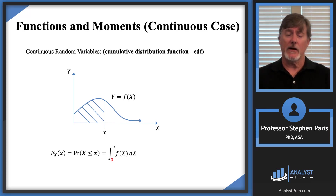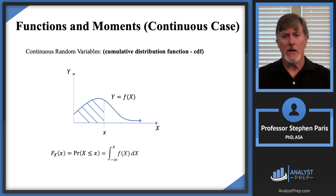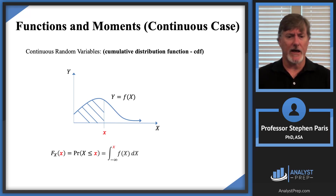Generally speaking, the distribution function is defined to be the probability that the random variable is less than or equal to X, and it's the integral from minus infinity to X of the density function. Now the X in the definition is just a placeholder value for the function. When you write functions, you put in some kind of placeholder, and I have an X here, but there's no reason it couldn't be a Z — the integral would then be from minus infinity to Z of the density function.